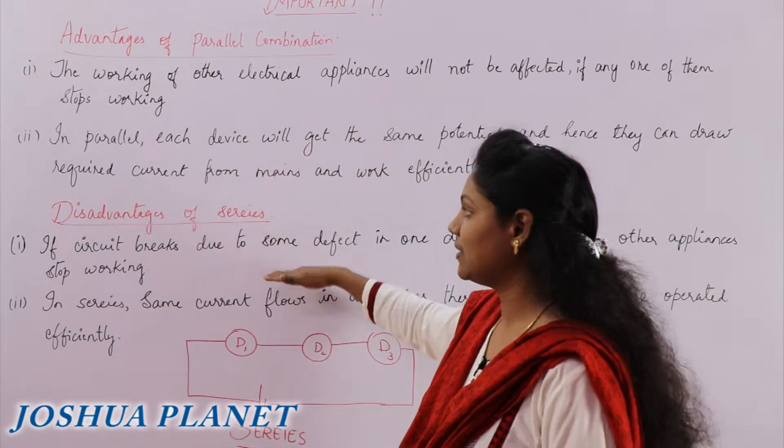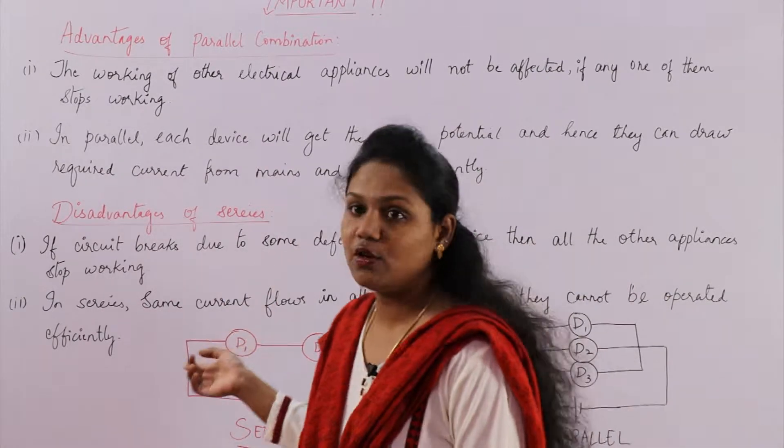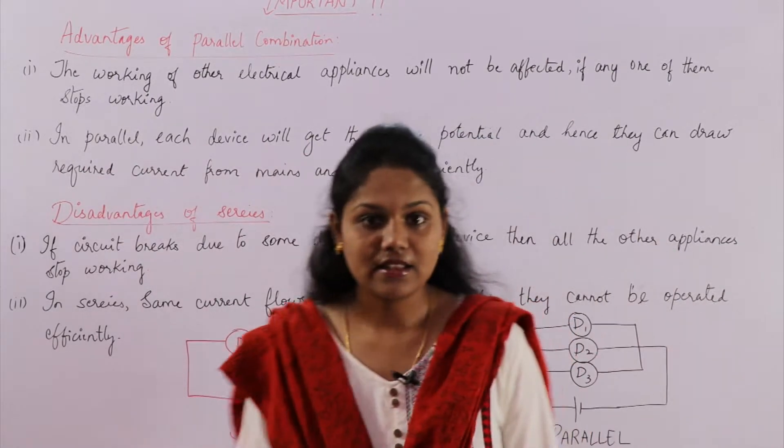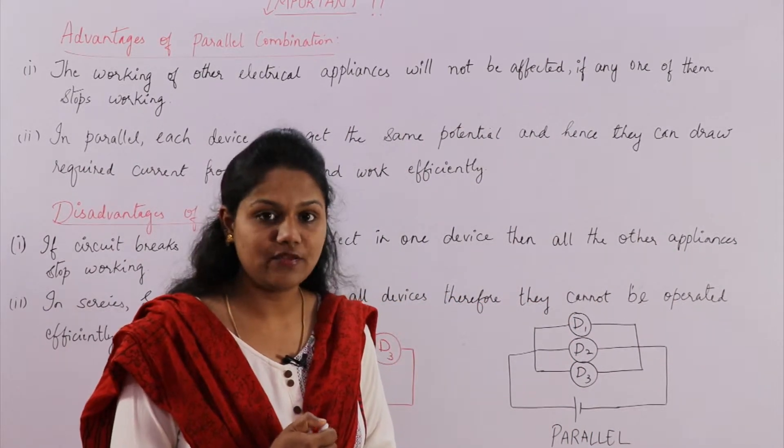So again, the same point is represented in series combination. You can check that if a circuit breaks due to any defect in one of the devices, then what will happen? Then the other devices also will stop working. So that will be the first point.